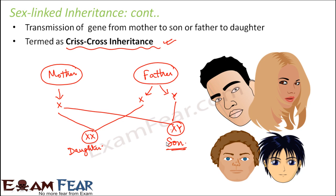The father can pass on the trait to the daughter but cannot directly pass it to the son — however, it can reappear in the grandson. If a daughter carries that particular trait and then gets married, she can give birth to a son who might have that trait. This is how criss-cross inheritance works. This was one of the important contributions of Morgan — he was the first to describe sex-linked inheritance, before which nobody knew that inheritance could be linked to sex chromosomes as well.